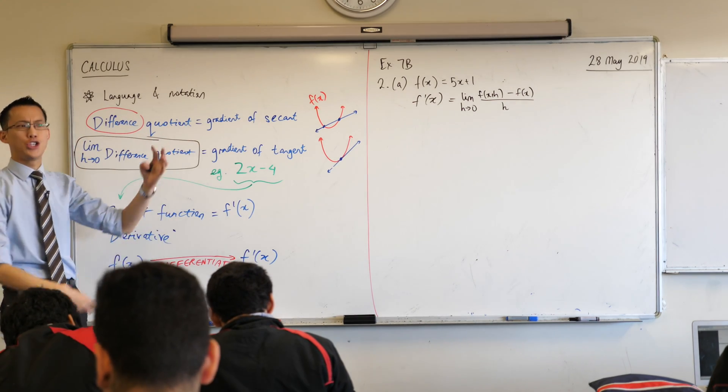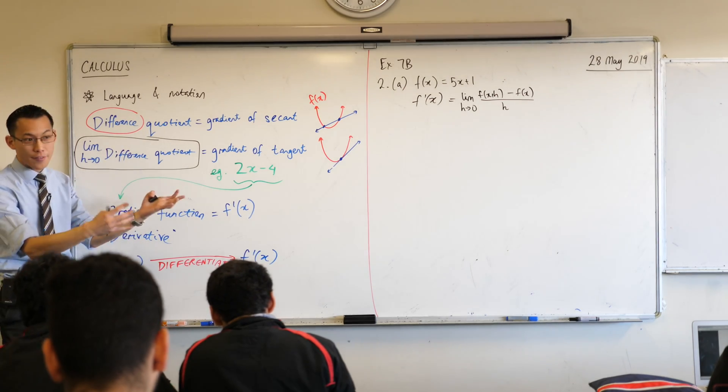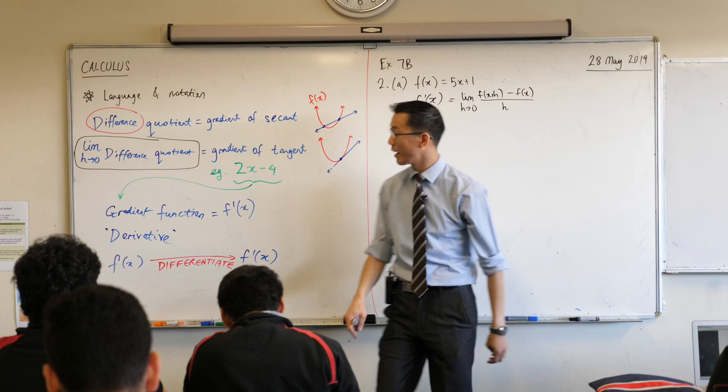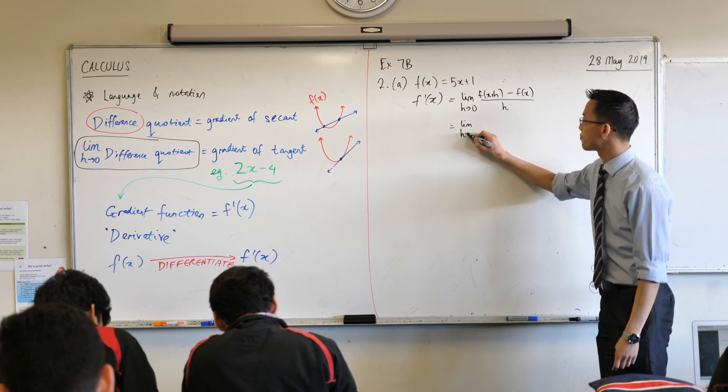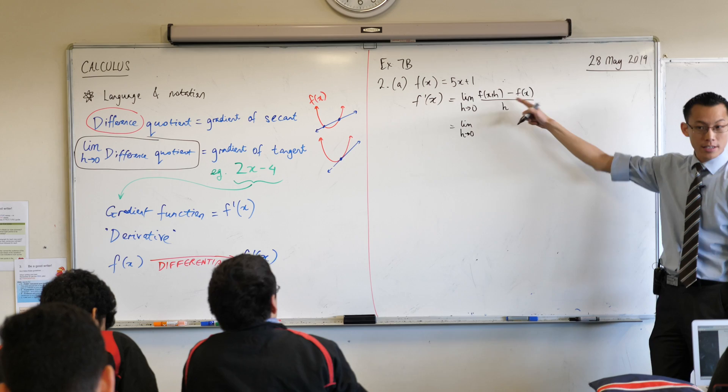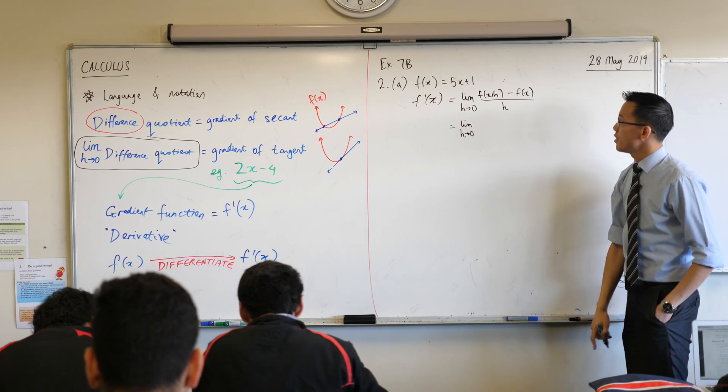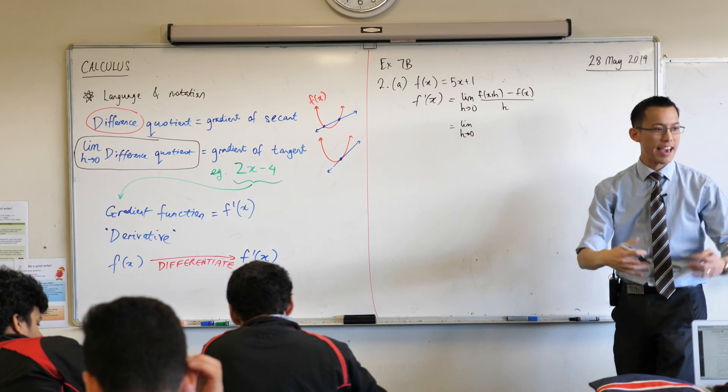So this is the general definition. This is what the derivative is for any function, but I've got a specific function, 5x plus 1. So let's have a go at replacing everything for this, which is general, with this, which is specific. So if this is my function, 5x plus 1, what's f of x plus h? What would I write?